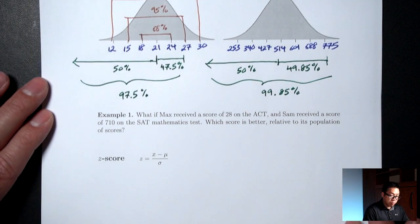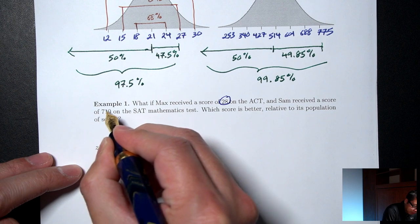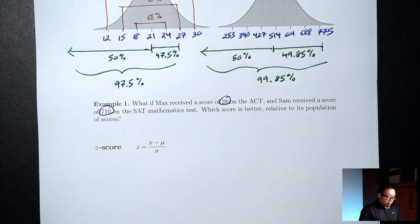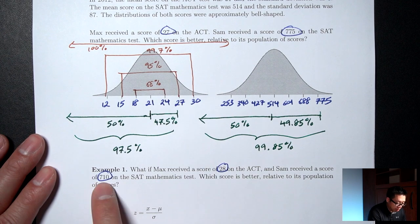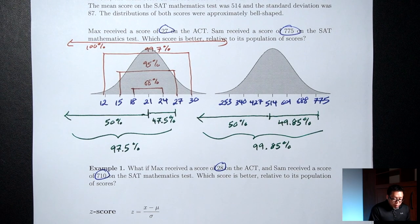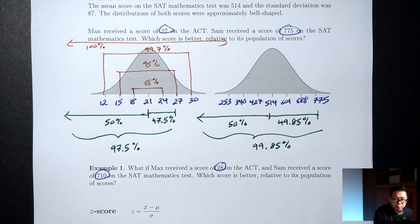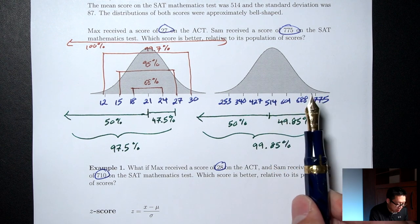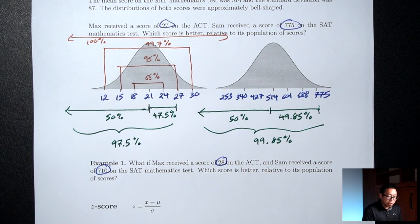Let's take a look at Example 1. Max got a 28 on the ACT and Sam got a 710 on the SAT. Same question — which score is better? Now it's a little harder because 28 is not one of the steps, and 710 is not one of the steps, so our argument doesn't quite work. The 28 is somewhere between 2 steps and 3 steps above. The 710 is also somewhere between 2 steps and 3 steps above, so we want to know which one is farther to the right.